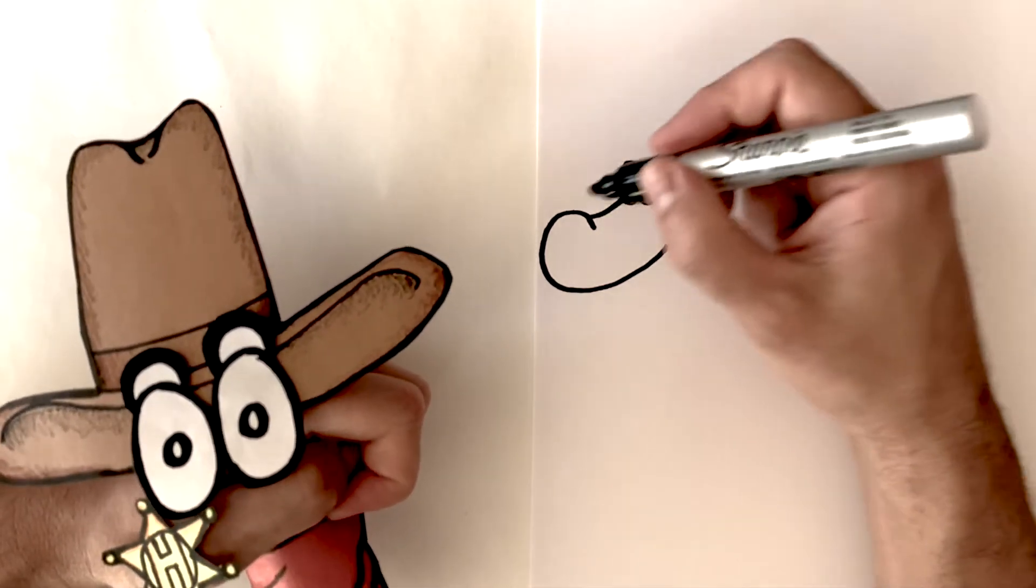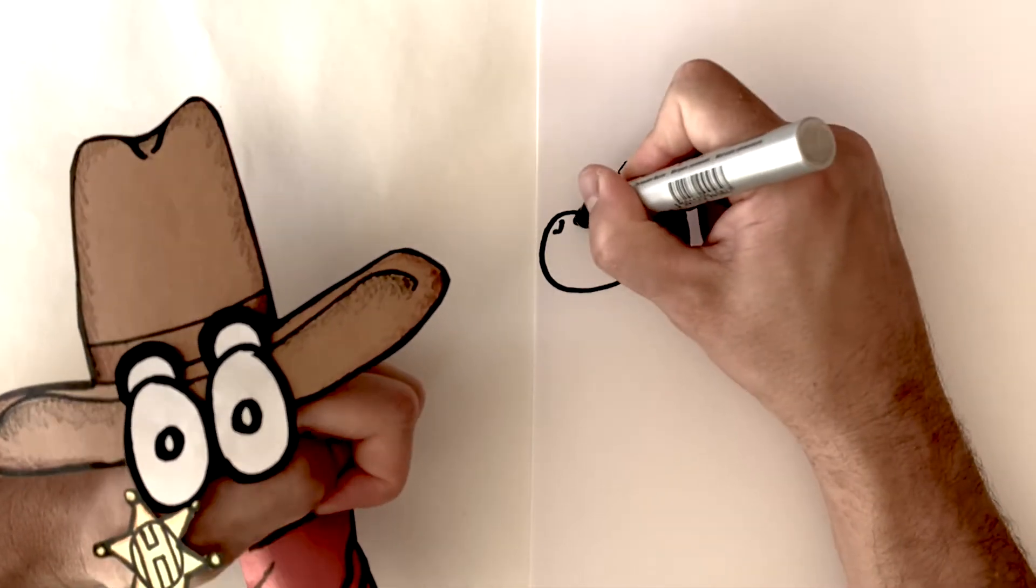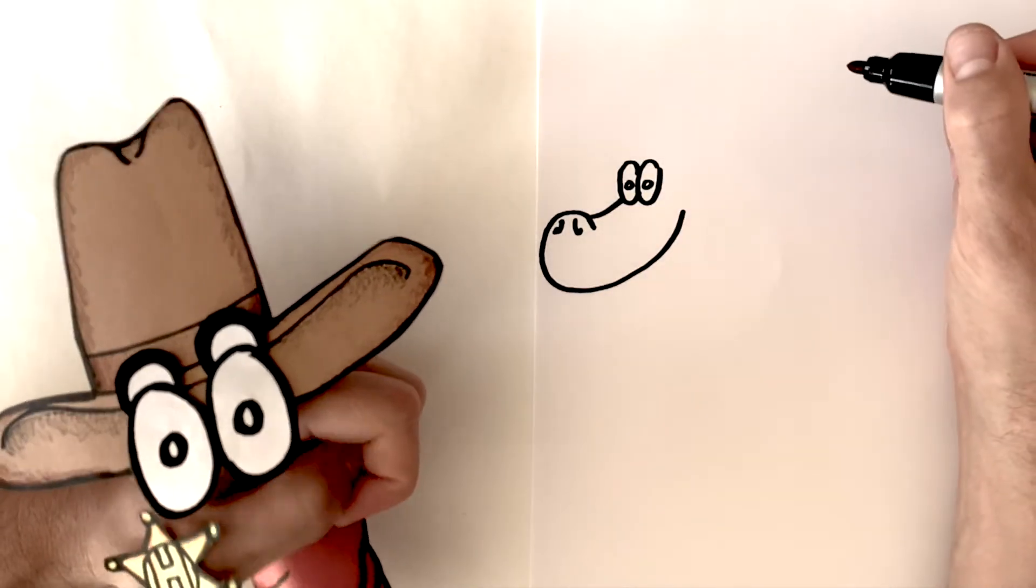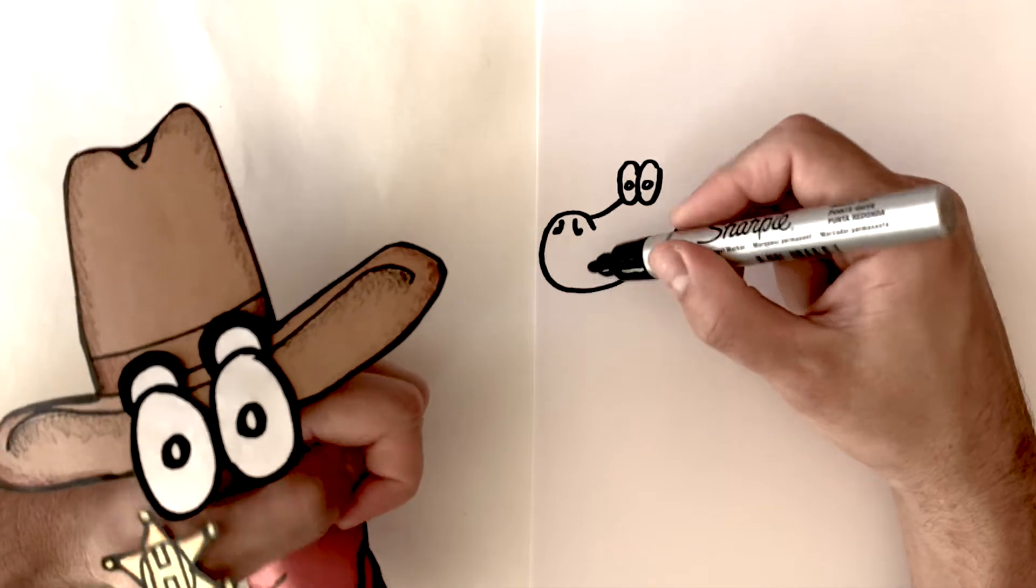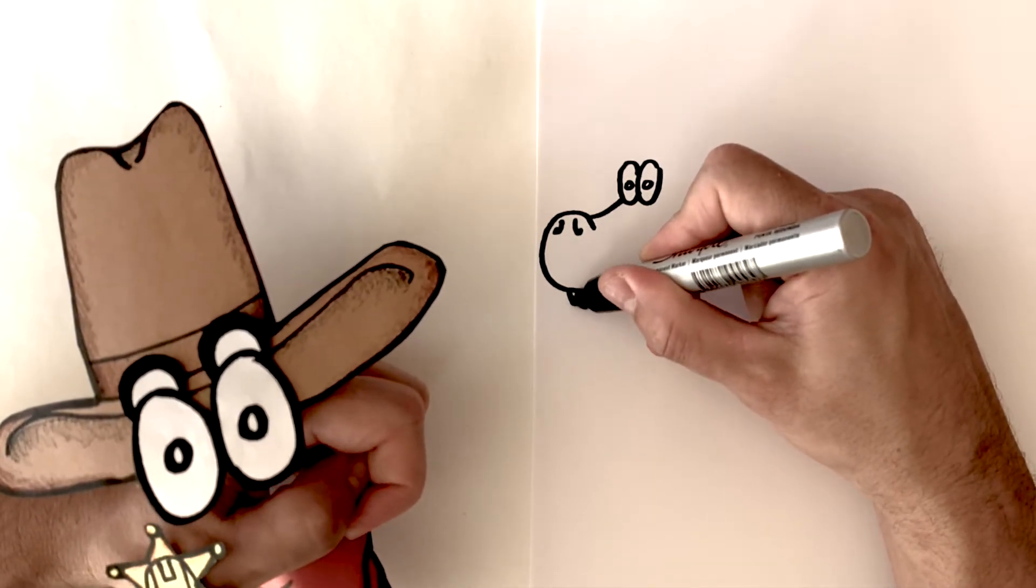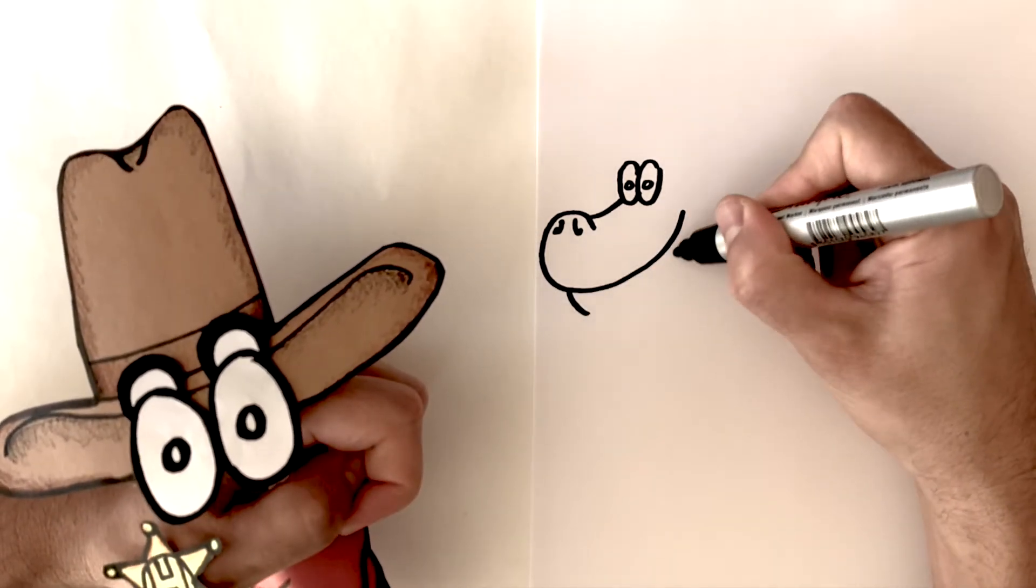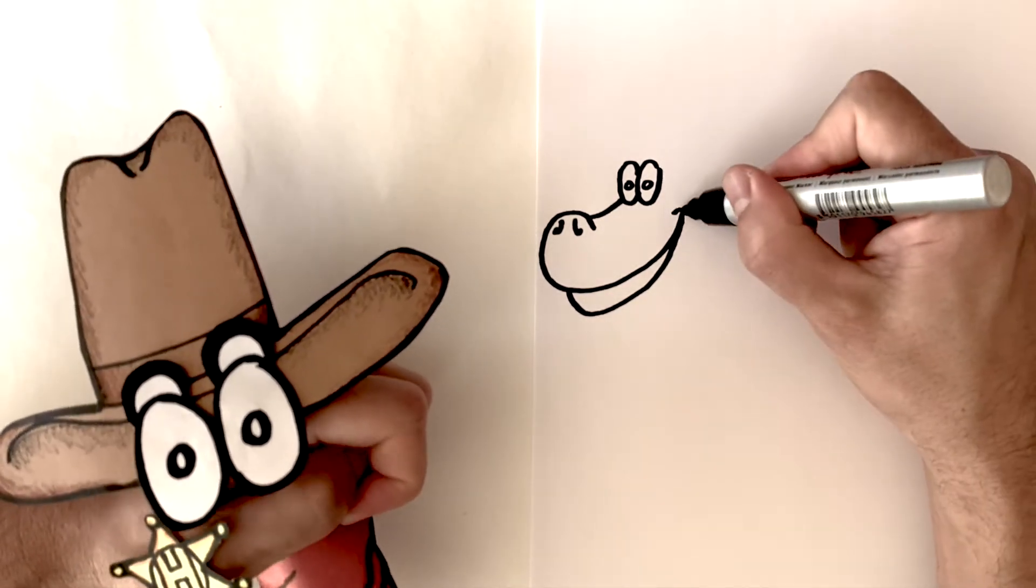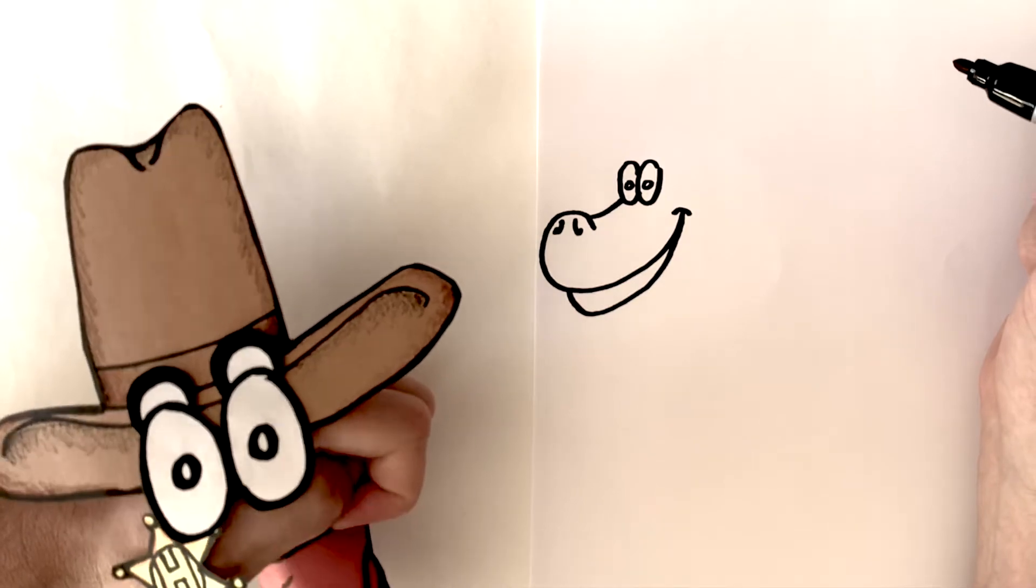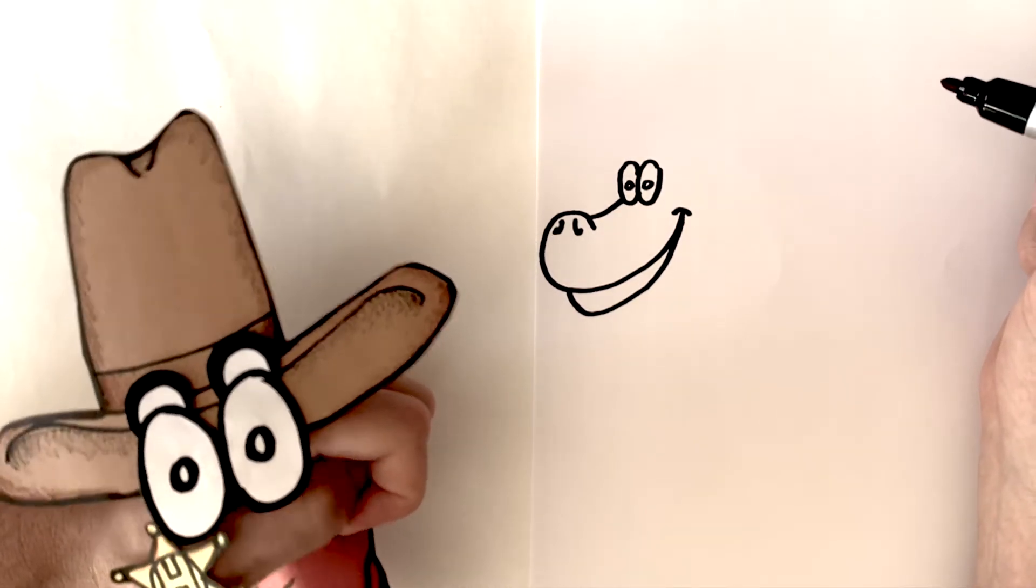Let's just draw those nostrils. Looking good! And then we're just gonna draw a little line like this. And bring it all the way up. Now we have the start of a happy Apatosaurus.